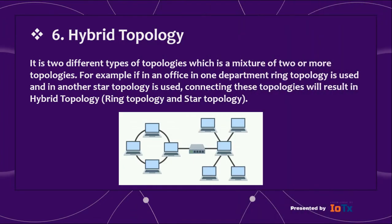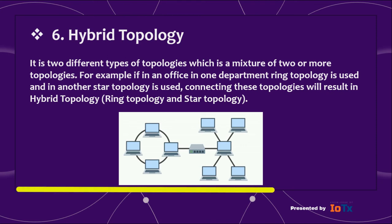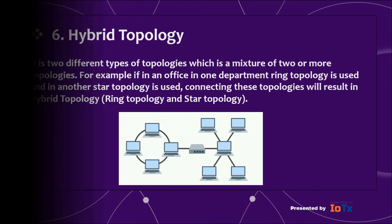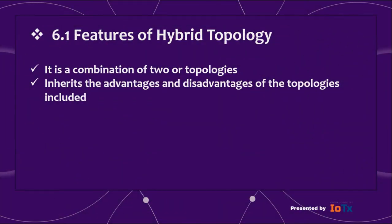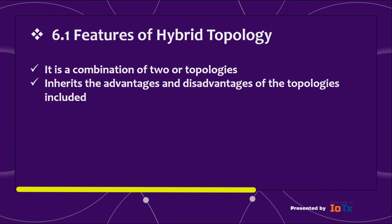Number six: hybrid topology. It is a mixture of two or more topologies. For example, if in an office one department uses ring topology and another uses star topology, connecting these topologies results in a hybrid topology. Features: it is a combination of two or more topologies and inherits the advantages and disadvantages of the topologies included.